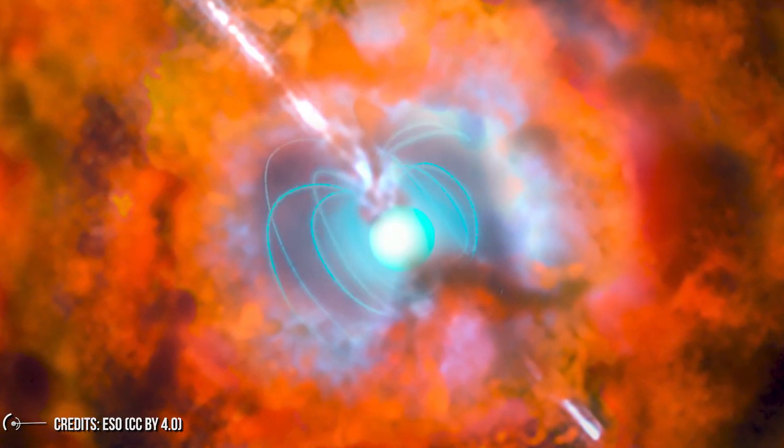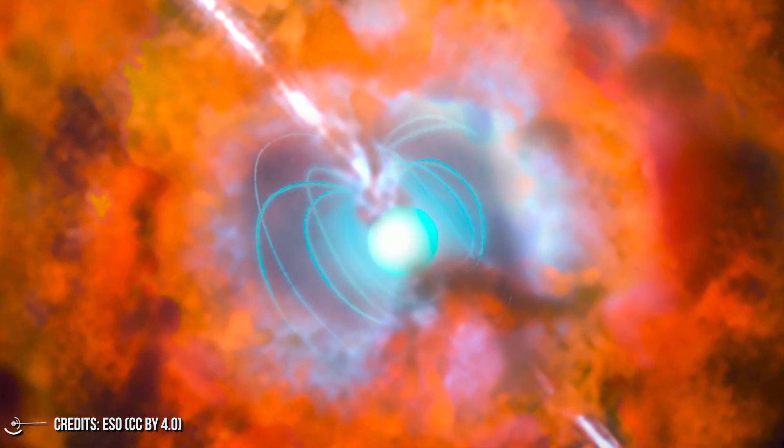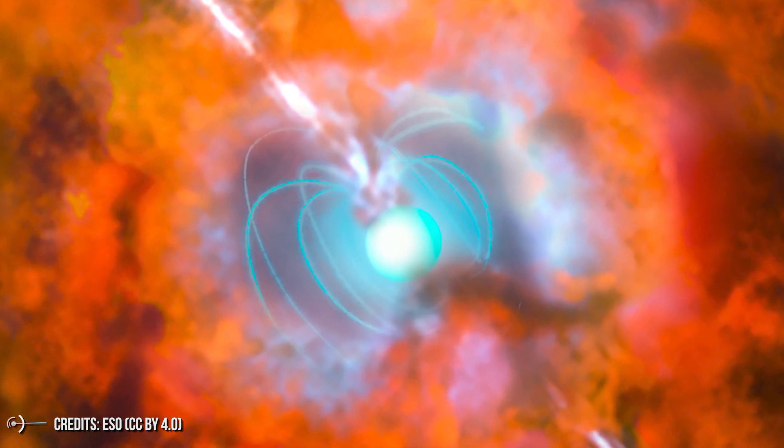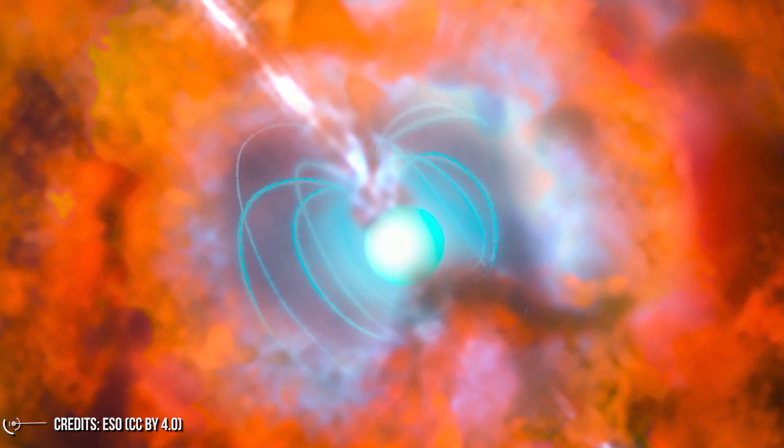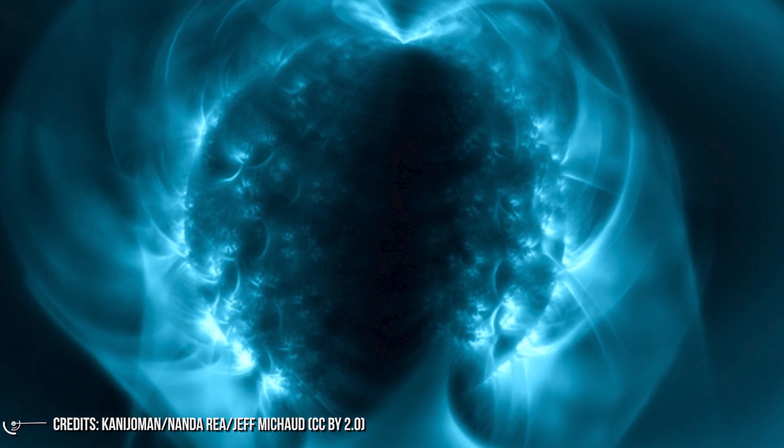When a star exits the main sequence phase, that is, the stability phase during which the combustion of hydrogen which converts it into helium takes place in the stellar core, it passes through the red giant phase, during which its diameter increases a lot. The subsequent evolution depends on the mass of the star.